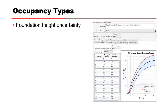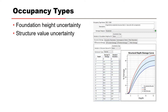Same with structure value — not every home is the exact same value. You can identify the uncertainty about your structure value at the occupancy type level so you don't have to know the exact value of every single structure. It's a way to make your life a lot easier so you don't have to go through a massive survey effort. Survey efforts are expensive — it would cost more to do the massive survey effort than to do pretty much anything else in the study.